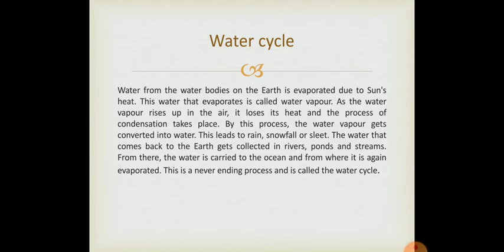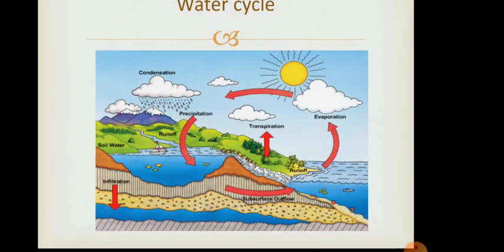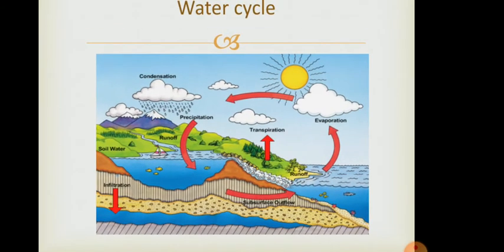Now we'll study about water cycle. This part is very important and very interesting. Let us understand this process through this picture. What is water cycle? When sunlight falls on the surface of water body, it gets heated. Here in this picture you can see water from the water bodies on the earth get evaporated due to sun's heat. This water that evaporates is called water vapor and this process is known as evaporation.